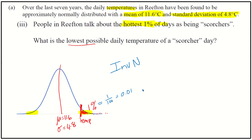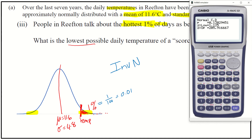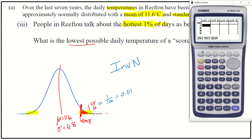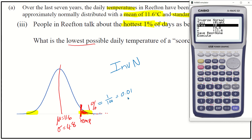So let's go to our calculator. Distributions, normal F1, and there's my inverse normal, so F3. Now I look at this diagram and I've shaded in the tail on the right hand side, so I need to say right instead of left — I'm going to select the right one, which is F2. Then I need my area, which is 0.01, and we've got our standard deviation of 4.8 and mean of 11.6.